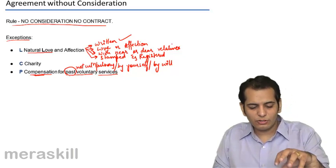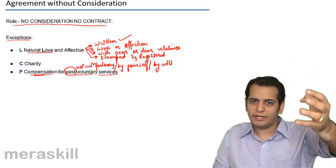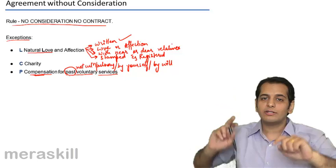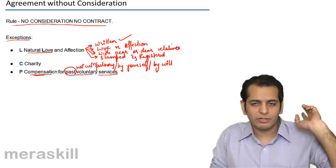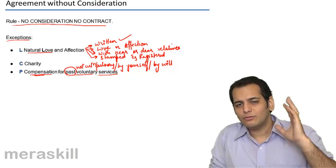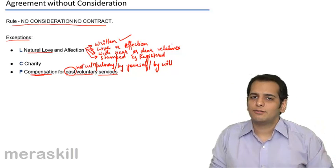So such contract where somebody promises to somebody else to compensate him for past voluntary services, past voluntary services, there even though there is no consideration in the contract, the contract is valid.